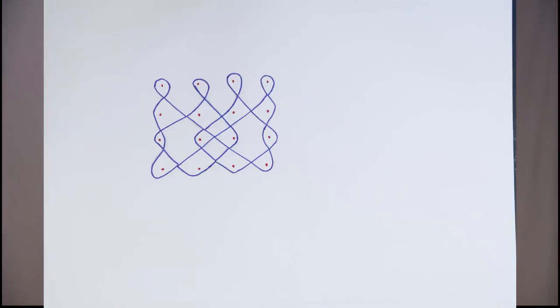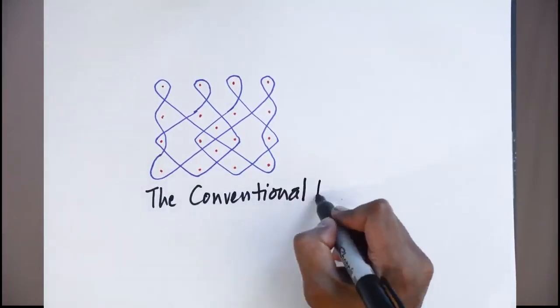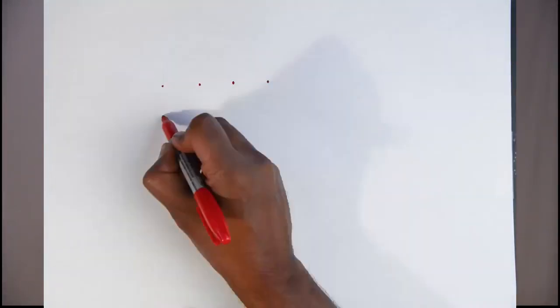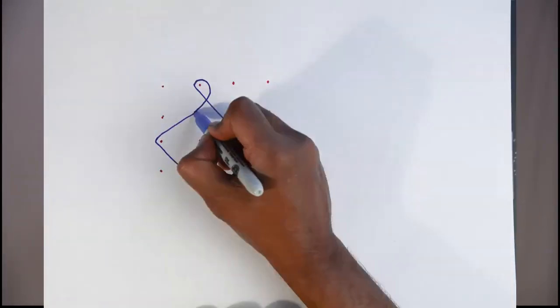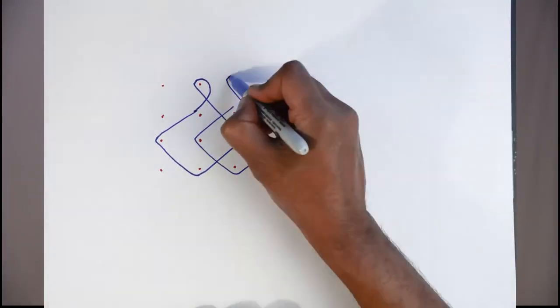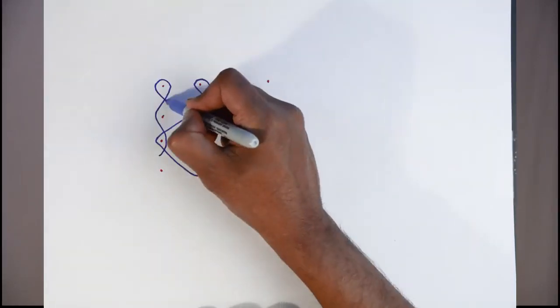There's a new way of perhaps looking at a kolam. The conventional way is to look at a set of dots and to start with a line and traverse all these dots in a certain way until you come back to the starting point. So you're seeing dots and lines.